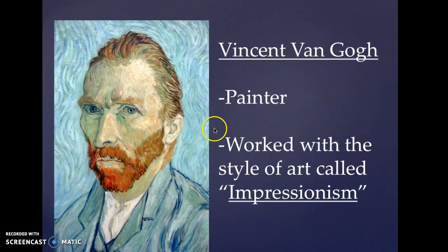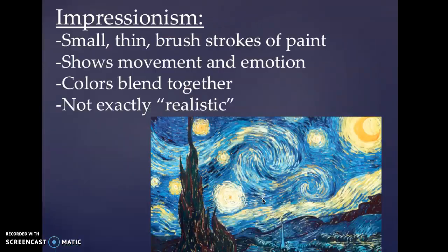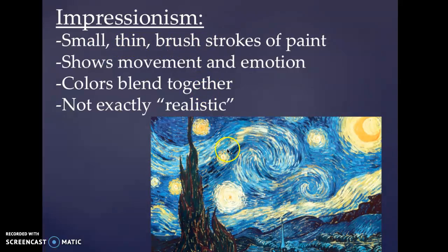Vincent van Gogh — this is a portrait, a painting that he created of himself. He was a painter, obviously, and he worked with a style of art called impressionism. This is a big word, and what it means is when he paints, he makes very small thin brushstrokes of paint. In his painting The Starry Night, you can see all those tiny little brushstrokes — they look like tiny little dotted lines going all throughout his entire painting.